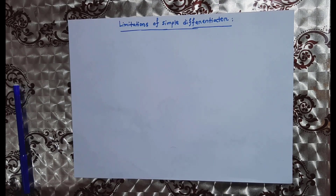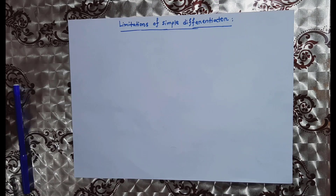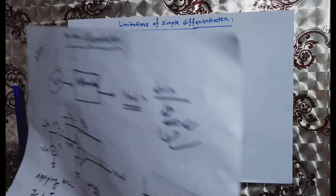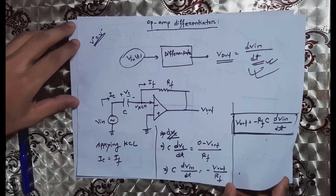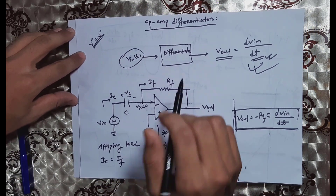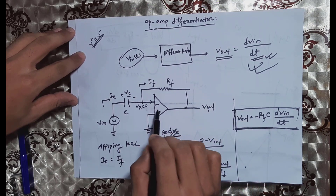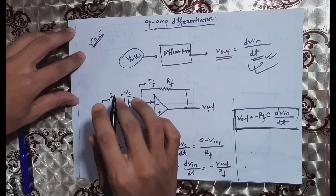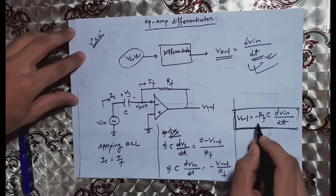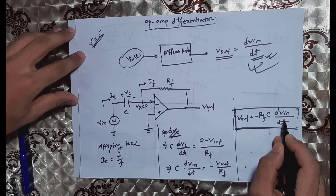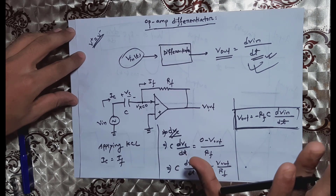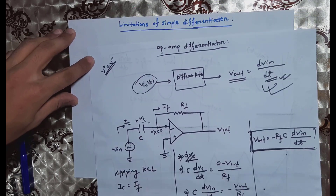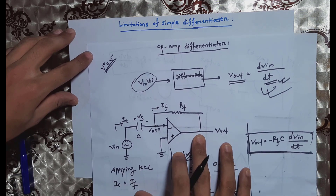Hi, in this video we will see the differentiator's limitations. In the previous video, we looked at the differentiator's key concepts, including negative feedback using the non-inverting amplifier. We saw that the output voltage is minus Rf into C times dV/dt. Now we will see the differentiator's limitations.